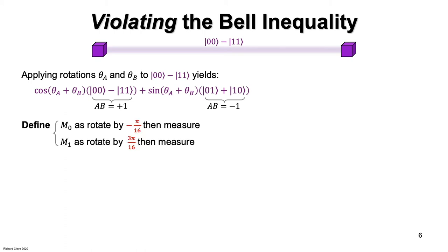Now consider these two measurements. M zero means rotate by minus pi over 16 and then measure in the computational basis. M one means rotate by plus three pi over 16 and then measure in the computational basis.